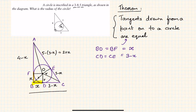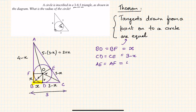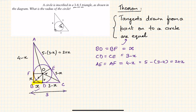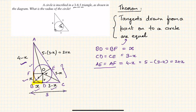So automatically CD becomes 3 minus x, because side BC was 3 units. Similarly, AE equals AF, and that equals 4 minus x. Also, AE equals AF equals 5 minus (3 minus x), which equals 2 plus x. So CE equals 3 minus x by the tangent theorem, and AE equals AF equals 2 plus x.